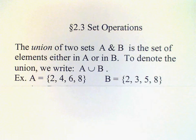So for example, we have two sets A consisting of 2, 4, 6, 8, and B: 2, 3, 5, 8, and we want to form the union.